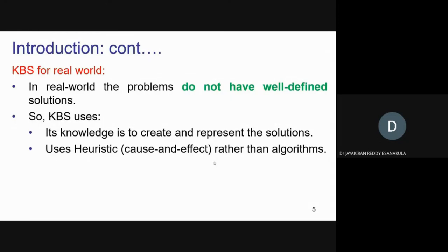Algorithms are something everyone knows about. If you go with just algorithms, the program cannot guarantee it is completely knowledge-based — it just has an expert-level approach. But with cause-and-effect reasoning, we can definitely call it a knowledge-based system.